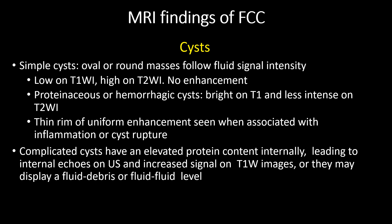MRI findings of FCC are variable. Cysts or simple cysts are oval or round masses following fluid signal intensity — typically low on T1-weighted images and high on T2-weighted images with no enhancement. Proteinaceous or hemorrhagic cysts are bright on T1 and less intense on T2-weighted images. A thin rim of uniform enhancement can be seen when associated with inflammation or cyst structure. Complicated cysts have an elevated protein content internally, leading to internal echoes on ultrasound and increased signal on T1-weighted images, or they may display a fluid-debris or fluid-fluid level.